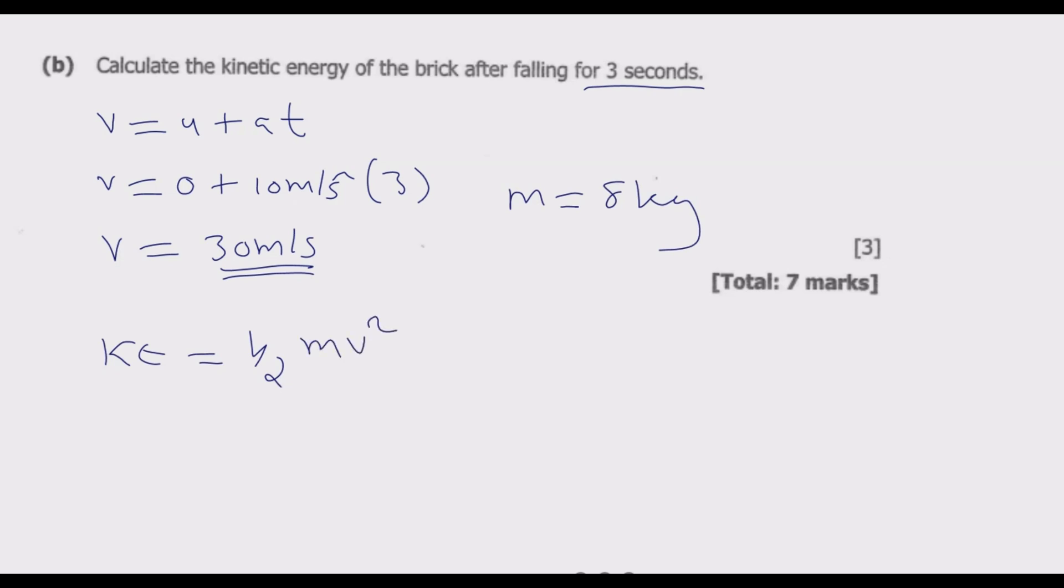Kinetic energy is given by ½ mass times velocity squared. This gives us ½ times 8 is 4, times 30 squared is 900, which equals 3,600 joules as the kinetic energy. This is how you find kinetic energy of a falling object using the given time and acceleration.